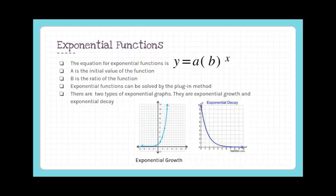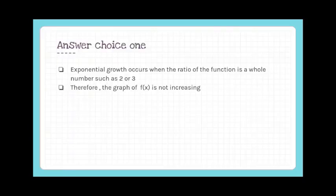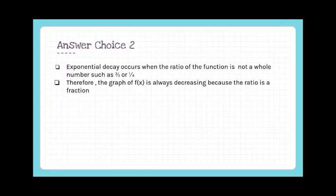Answer choice 1 — the graph is always increasing: exponential growth occurs when the ratio is a whole number such as 2 or 3. Since the ratio here is 1/8, the graph is not increasing, so choice 1 is incorrect. Answer choice 2 — the graph is always decreasing: exponential decay occurs when the ratio is a fraction such as 2/3 or 1/4. Since the ratio is 1/8, the graph is always decreasing.